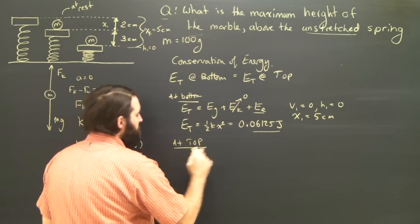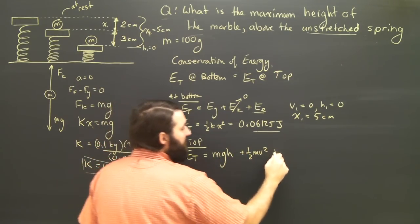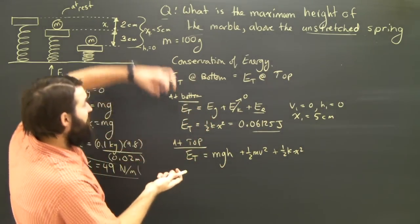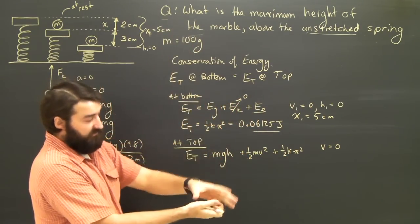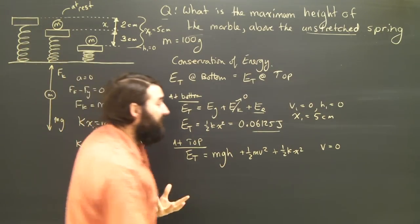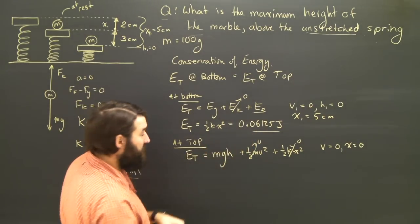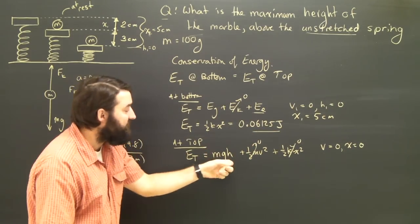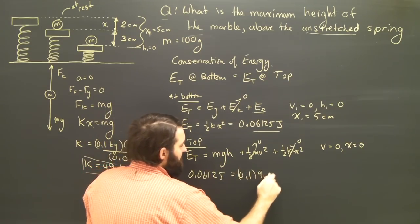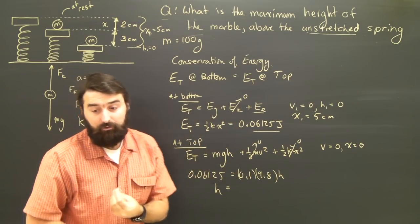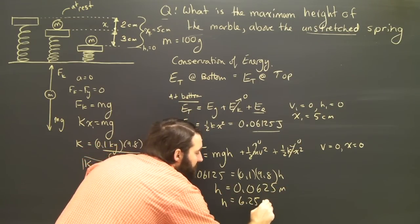At the top of the marble's flight, the kinetic energy is zero since it momentarily stops, and the spring has long been left behind so x is also zero — the elastic energy is zero. The total energy, which we know is 0.0625 joules, equals only MGH. Solving for H: 0.0625 equals 0.1 times 9.8 times H, which gives H equals 0.0625 meters, or 6.25 centimeters.